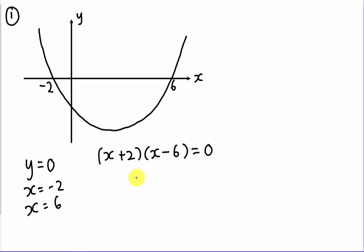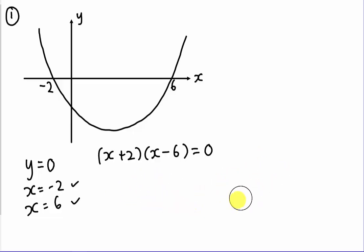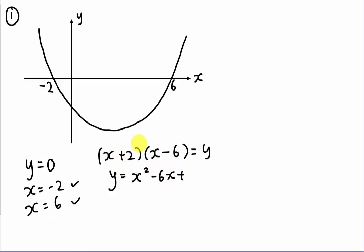If you separate them: x + 2 = 0 gives x = −2, and x − 6 = 0 gives x = 6. Working backwards, I join them: (x + 2)(x − 6), but instead of equals zero I write equals y to form the equation of the curve. Expanding gives y = x² − 4x − 12.